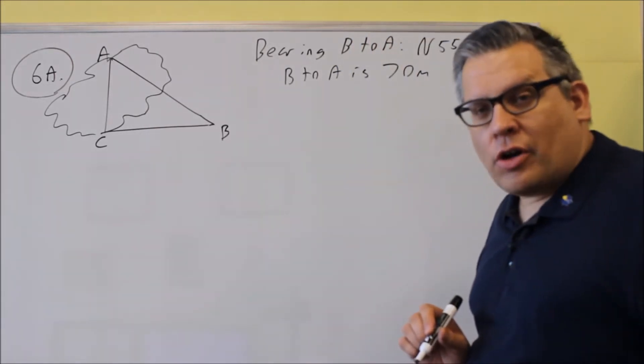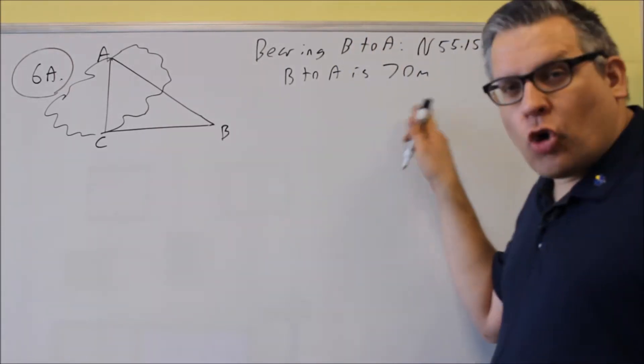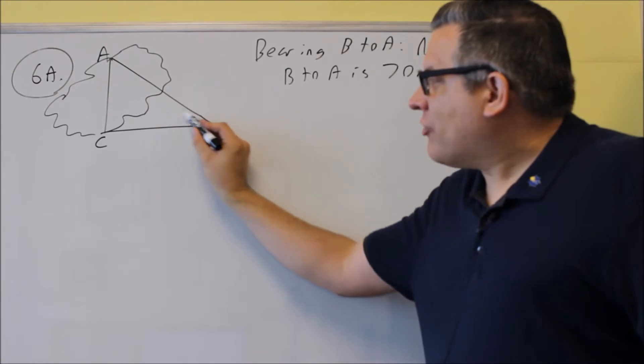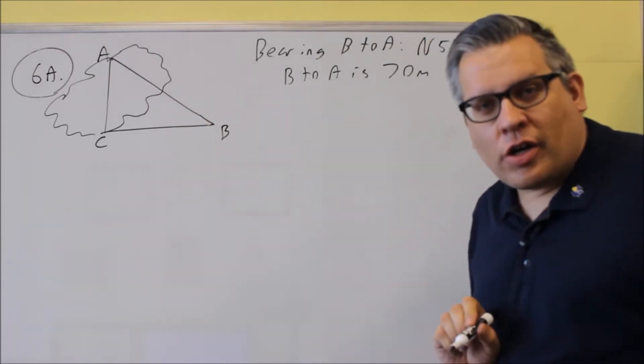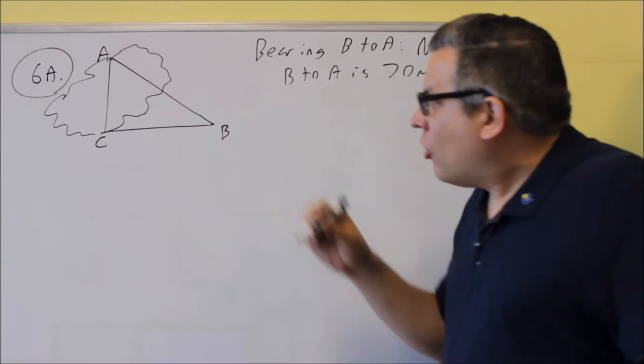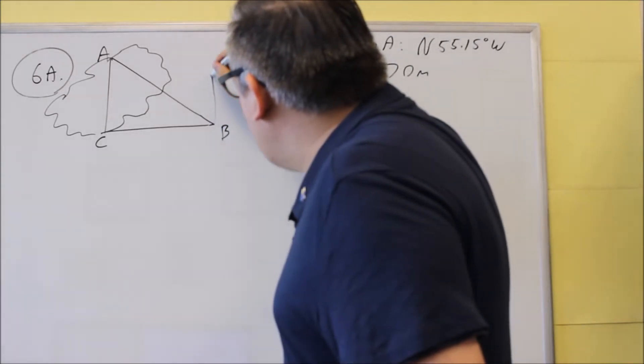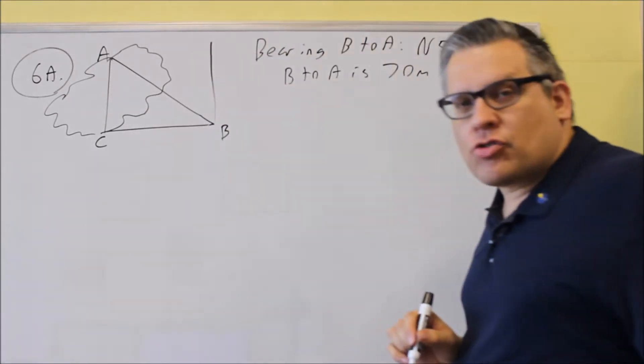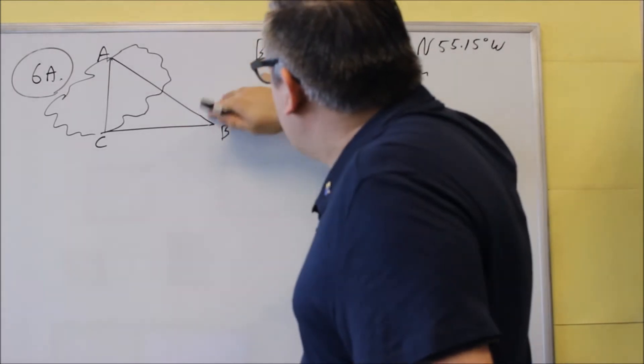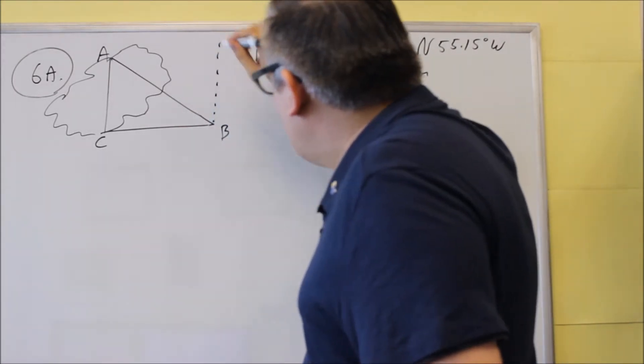Now first let's draw the bearing in. Don't make the mistake of putting 55.15 inside the triangle. Remember bearing is always measured from the north or the south. So in this case we have to draw a line like this. Let's see if we can even make a dotted line. Dotted line there.